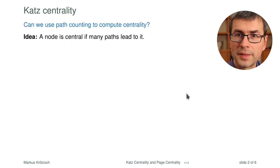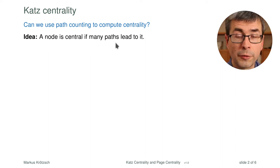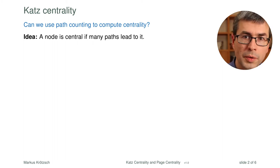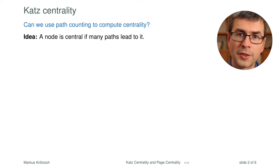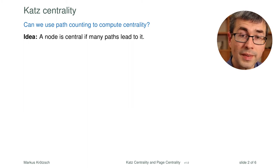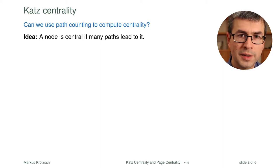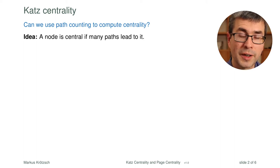Is path counting good for centrality? The idea is: a node is central if many paths lead to it. However, there's a catch — if you count paths that go in cycles, passing through one node or edge multiple times, you often find infinitely many paths leading to any node. In a strongly connected graph, every node has infinitely many incoming paths, which does not help you rank nodes by importance. There can be an infinite number of directed paths if a graph has cycles at all.